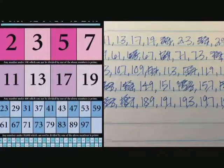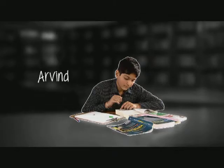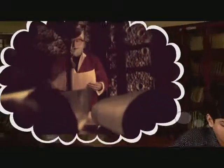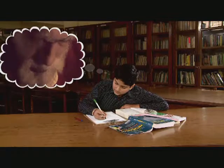Now primes have fascinated mankind through the ages. Arvind is in the library reading up on this. He reads about Eratosthenes, who was the head librarian at the famous library in Alexandria, Egypt, over 2500 years ago. Among many other things, he worked out a way of locating prime numbers. The method came to be known as the Sieve of Eratosthenes. Arvind tries to see how it works.